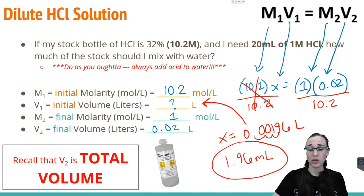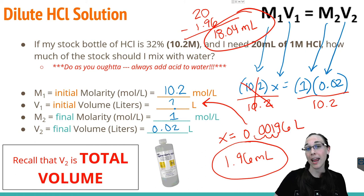Well, remember that our final volume is both the water and the chemical together. So in order to know how much water to add, I actually need to say 20 milliliters minus 1.96 milliliters, and that'll give me 18.04 milliliters. So in the lab, I need to measure out 18.04 milliliters of water and mix that with 1.96 milliliters of HCl in order to create 20 milliliters of a 1 molar solution of hydrochloric acid. Let's see how it's done in the lab.